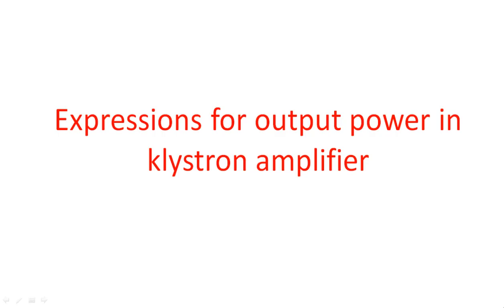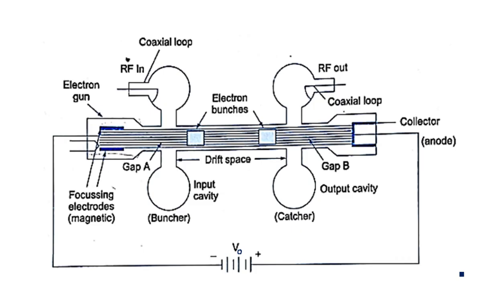In this video, I am going to explain the calculation of output power in a klystron amplifier. In the previous video, I explained the operation and working of this klystron amplifier, and later we saw the mathematical analysis where we calculated the velocity of the electron after application of RF input voltage, and the distance between the buncher and catcher cavities. Now let us consider the same diagram of the klystron amplifier for the calculation of output power from the RF output.